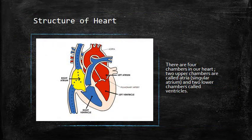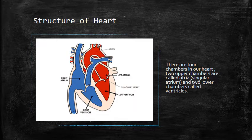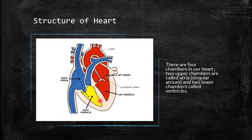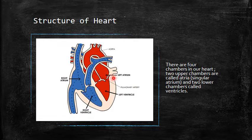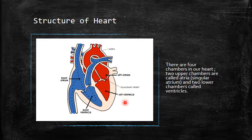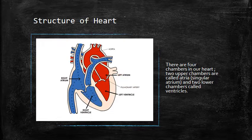There are four chambers in our heart. The two upper chambers are called atria and the two lower chambers are called ventricles. Chamber one is the right atrium, chamber two is the right ventricle, chamber three is the left atrium, and chamber four is the left ventricle.